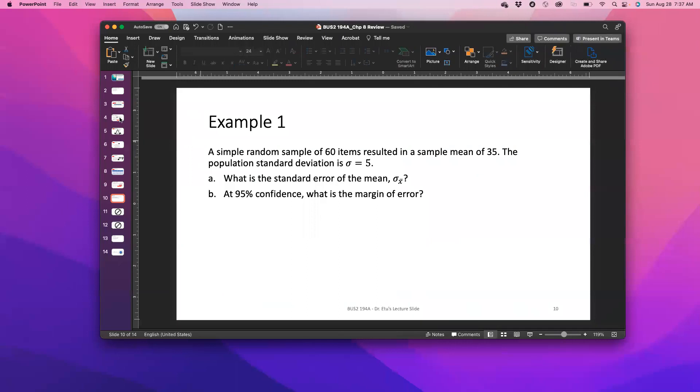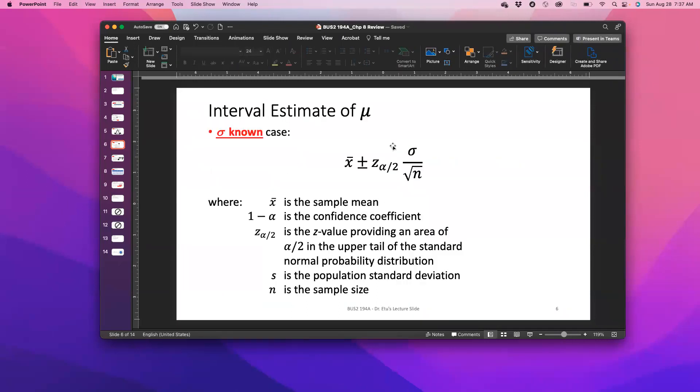So 1 minus alpha over 2. What we're basically doing there is, remember here, it's z alpha over 2. So this part here is called the margin of error. z alpha over 2 multiplied by the standard error is called the margin of error. So what we're doing now is to find the z alpha over 2.